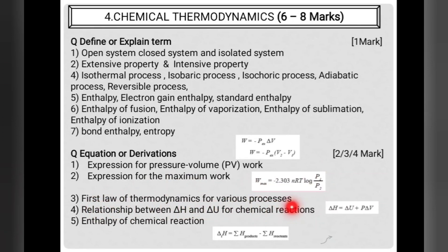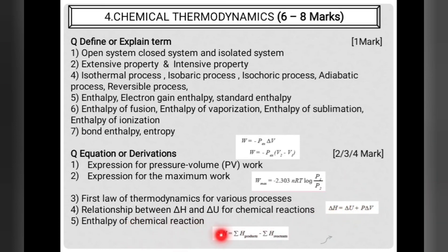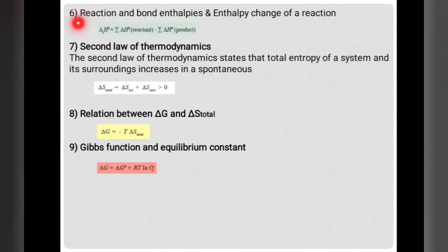The first law of thermodynamics must be modified for isothermal, isobaric, isochoric, and adiabatic reversible processes. The relationship between ΔH and ΔU is: ΔH = ΔU + PΔV, which can be related to the ideal gas equation PV = nRT. The enthalpy of chemical reaction is: ΔH = Σ(enthalpies of products) − Σ(enthalpies of reactants). Standard enthalpy can also be calculated from bond enthalpies: ΔH = Σ(reactant bond enthalpies) − Σ(product bond enthalpies).